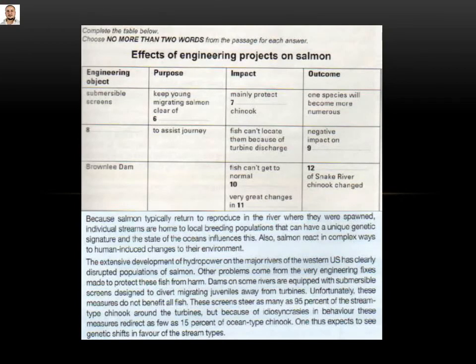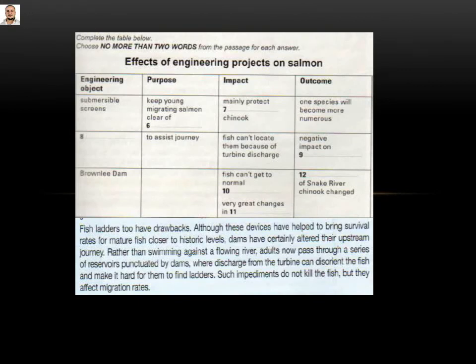The next row has an engineering object as a gap, then the purpose to assist the journey, then we have the outcome. 'Although these devices have helped to bring survival rates for migratory fish closer to historic levels' — 'helped' means assisted the journey. So what's the engineering object? Fish ladders. That means number eight will be 'fish ladders.'